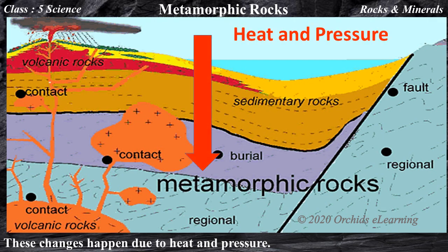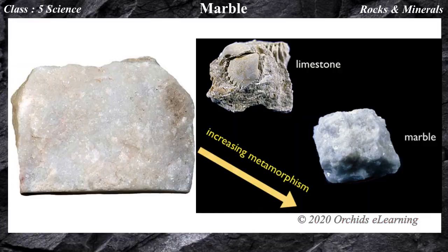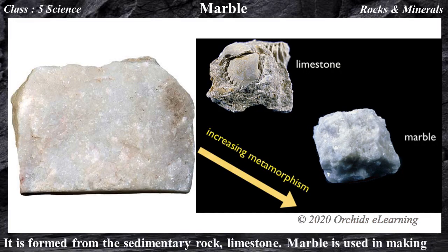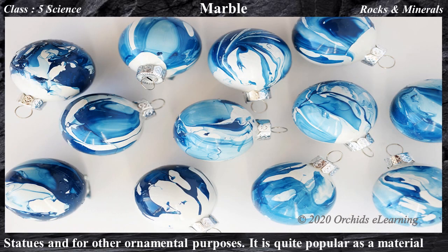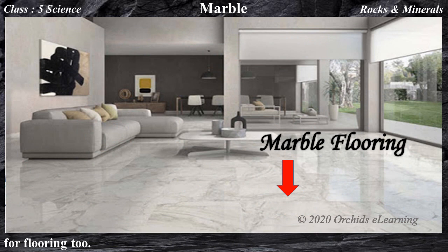The examples of metamorphic rocks are: Marble — it is formed from the sedimentary rock limestone. Marble is quite popular as a material for flooring too.